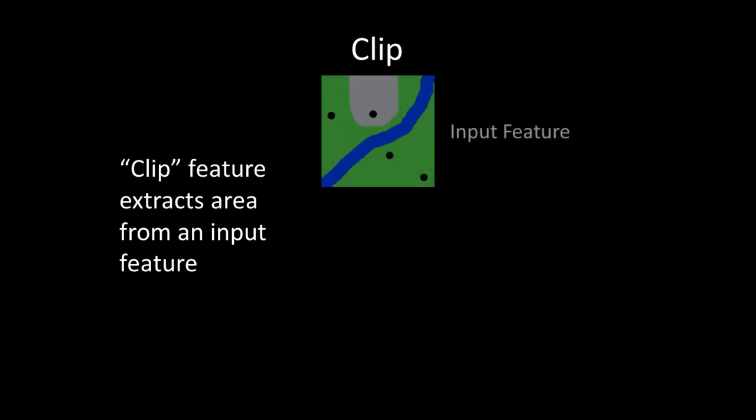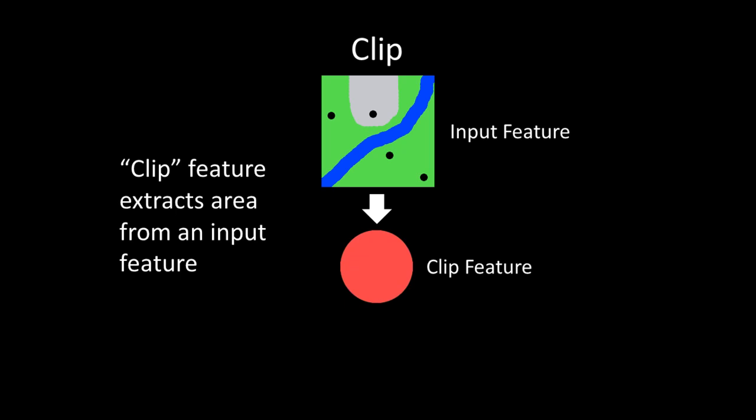Clip is when a feature called the clip feature is used to extract an area from an input feature to create an output feature. One way to think of clip is like making cookies — you can think of the clip feature as the cookie cutter and the input feature as the dough. You can define a clip feature for the area you want to clip out from the input feature, and the output feature is then clipped out accordingly.